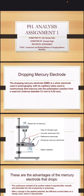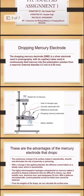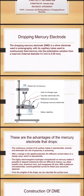The capillary tube has an internal diameter of 0.3 mm to 0.05 mm and is used to feed mercury from a reservoir into the solution. This is the basic structural description of the dropping mercury electrode as used in polarography.